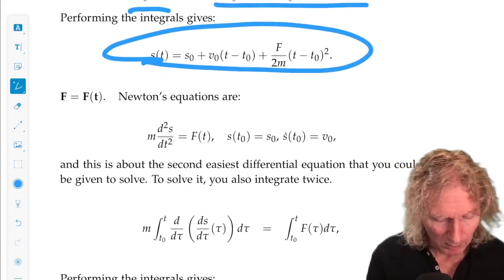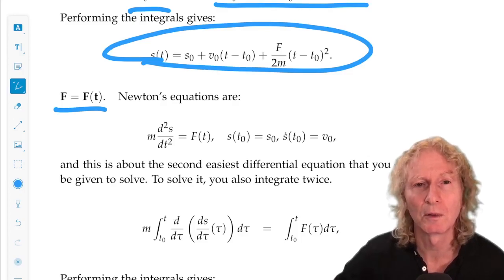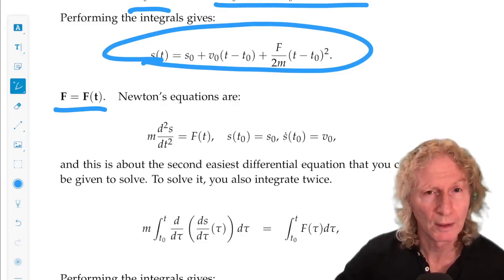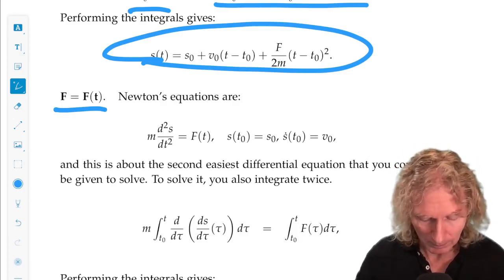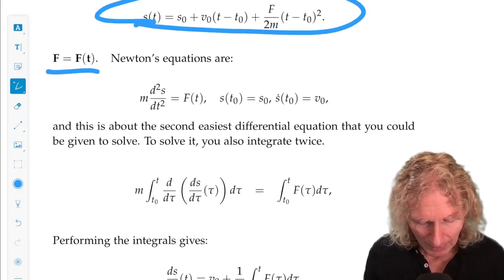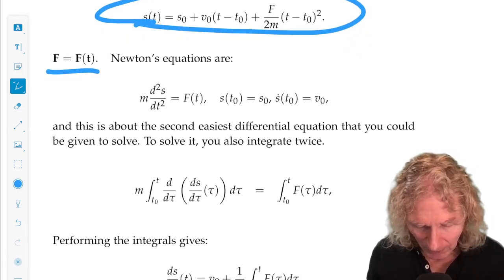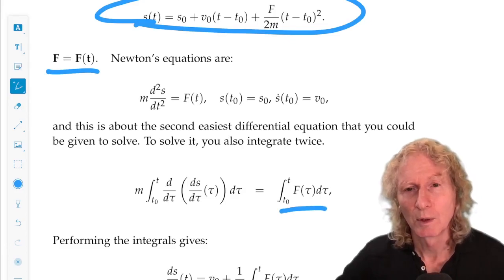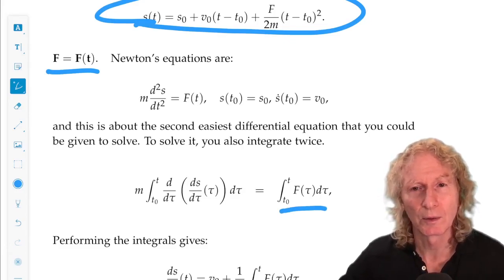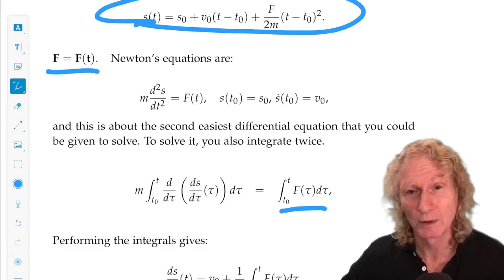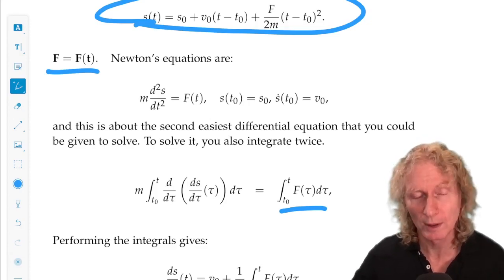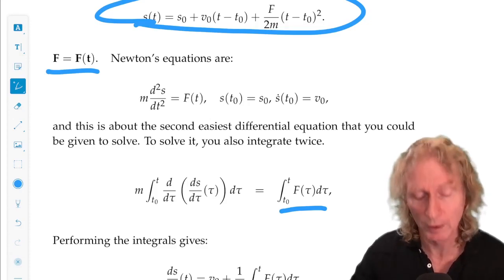Okay, now we're going to consider the case where f is solely a function of time. Now, everything is going to be the same except we're going to have to carry along this integral on the right-hand side because f is now a function of time and it has to be integrated over whatever this explicit function is.